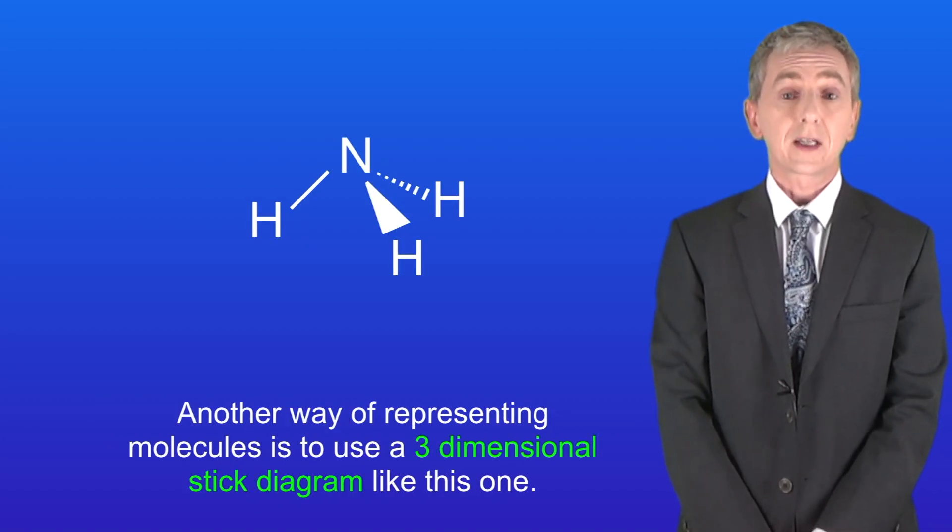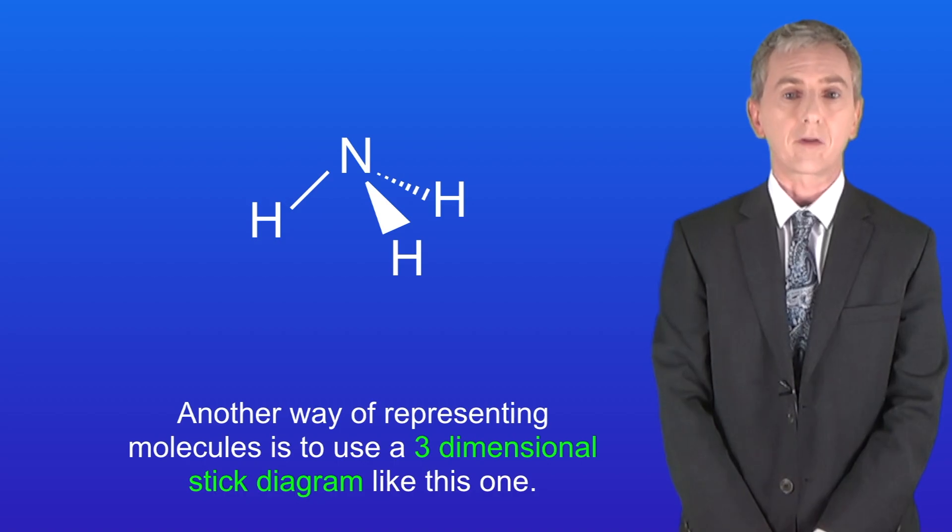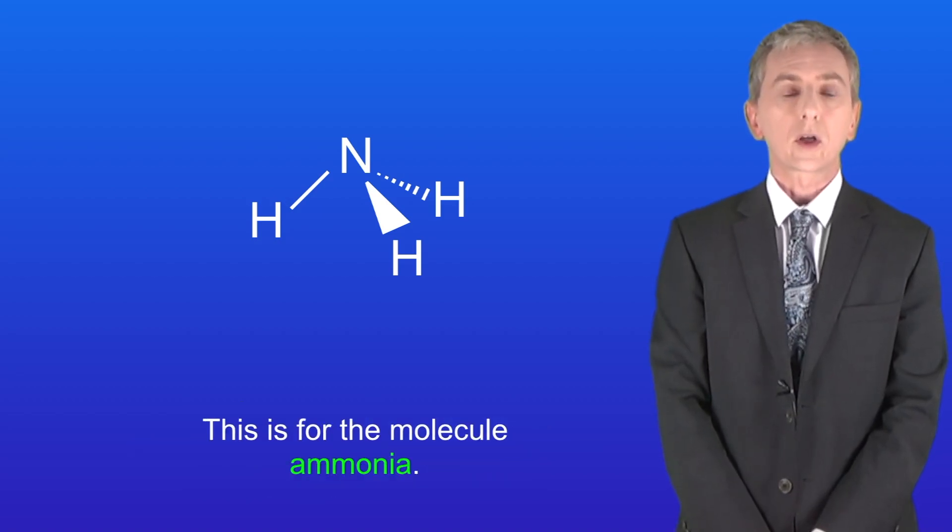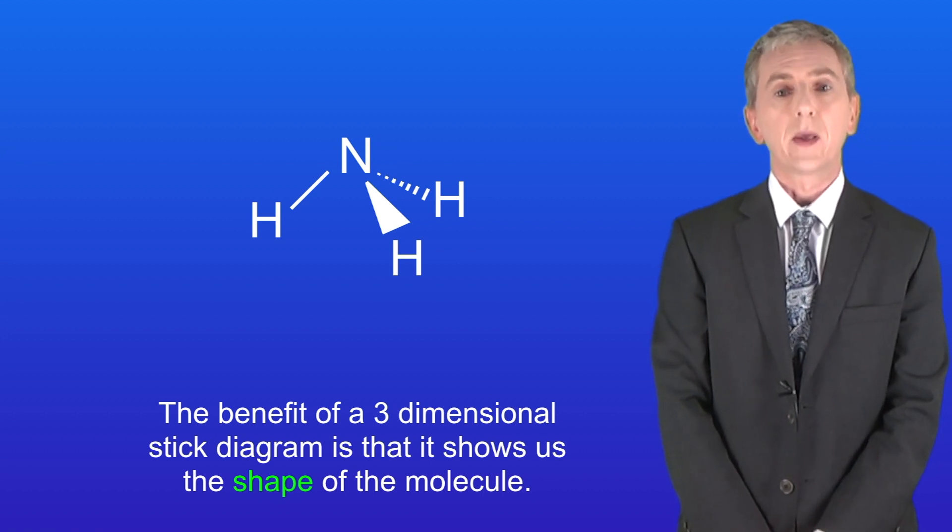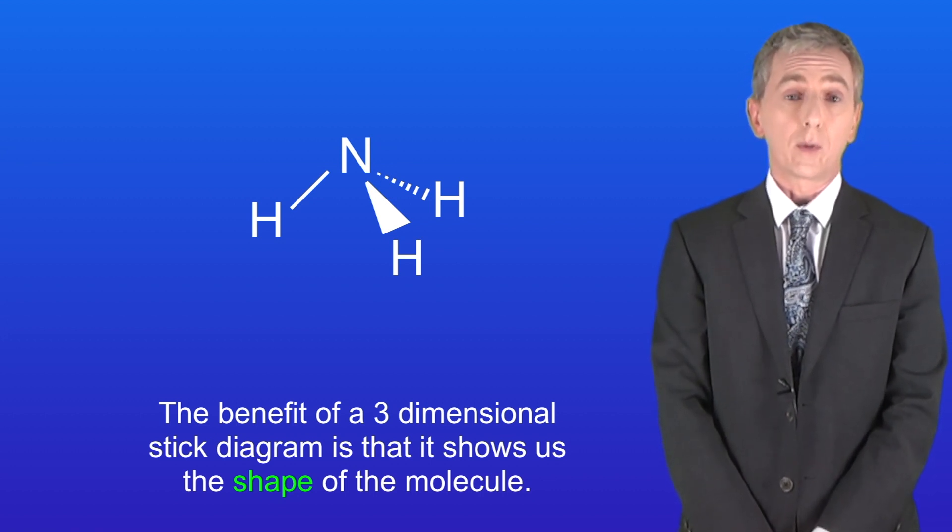Another way of representing molecules is to use a three-dimensional stick diagram like this one. This is for the molecule ammonia. The benefit of a three-dimensional stick diagram is that it shows us the shape of the molecule.